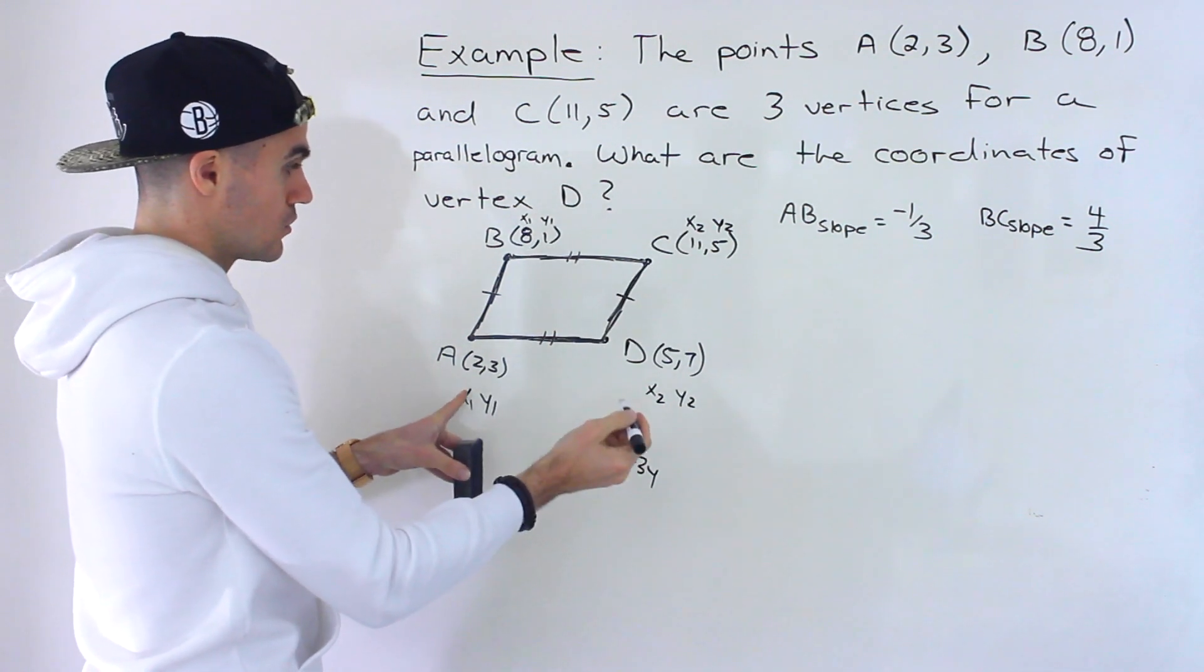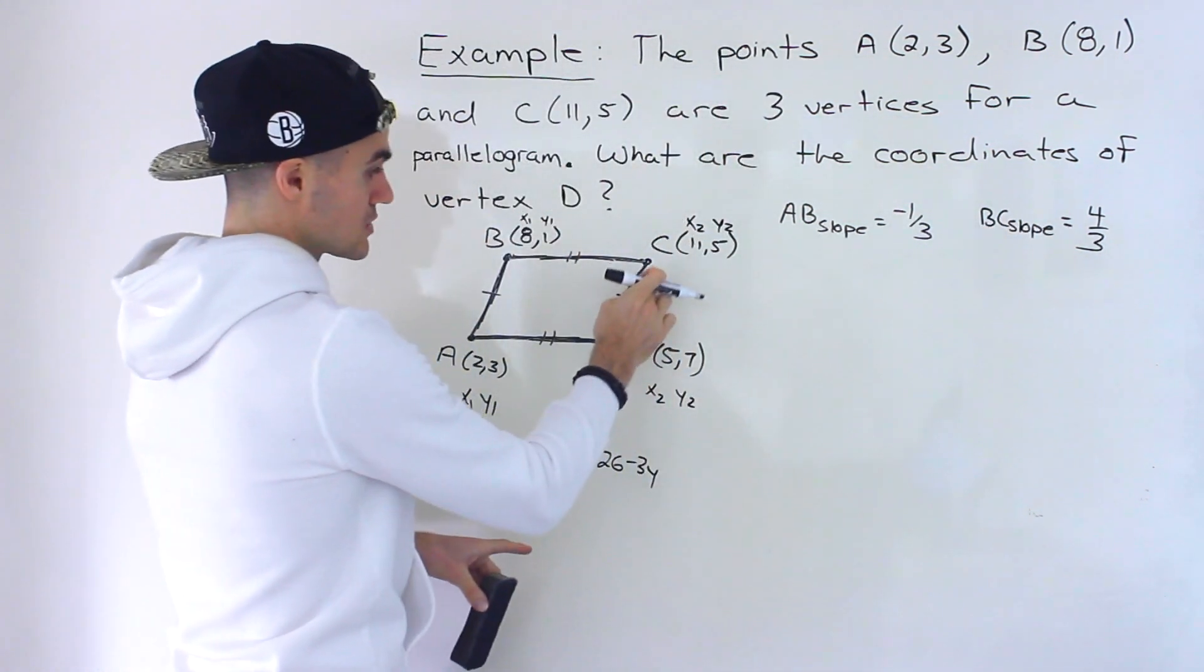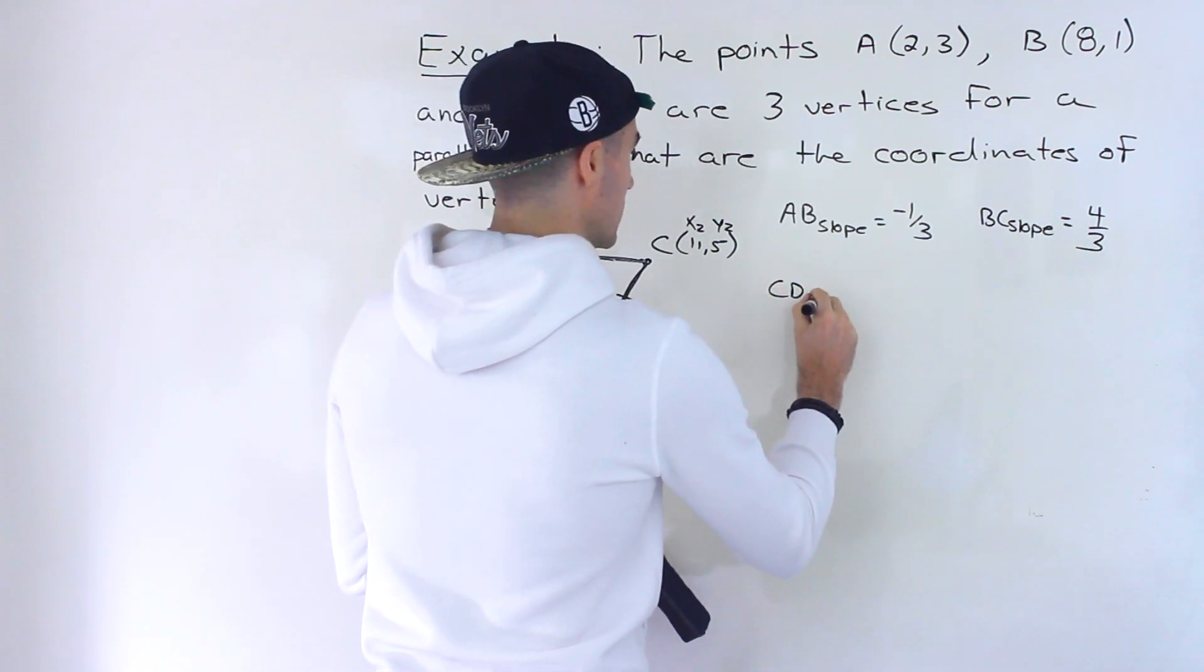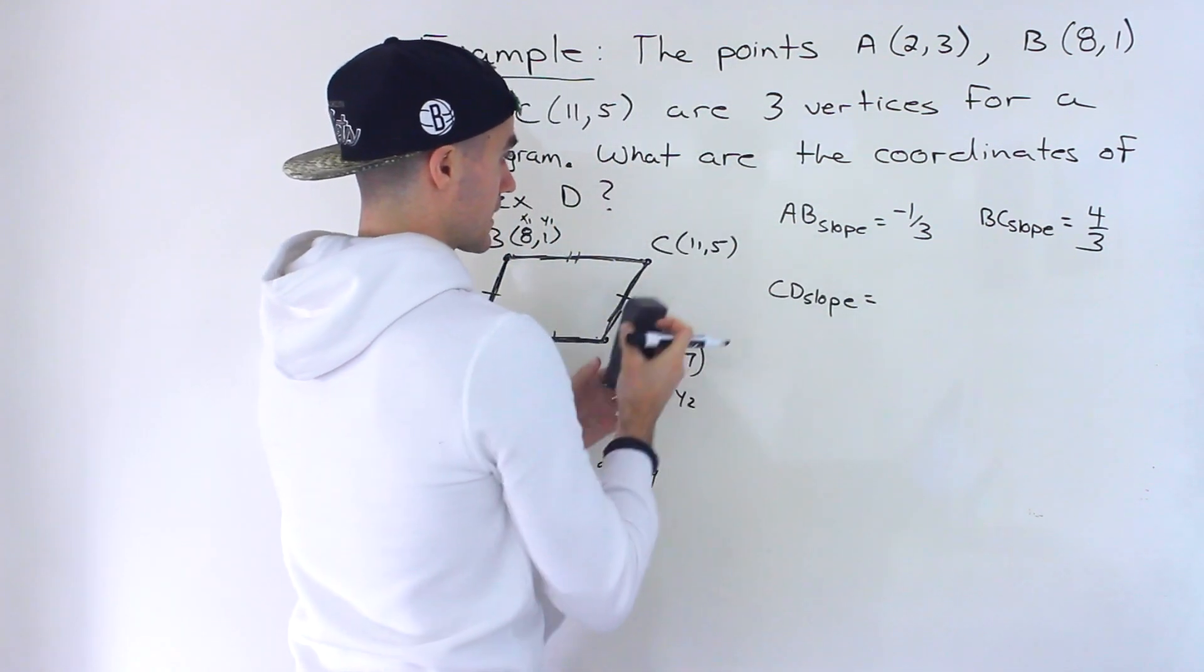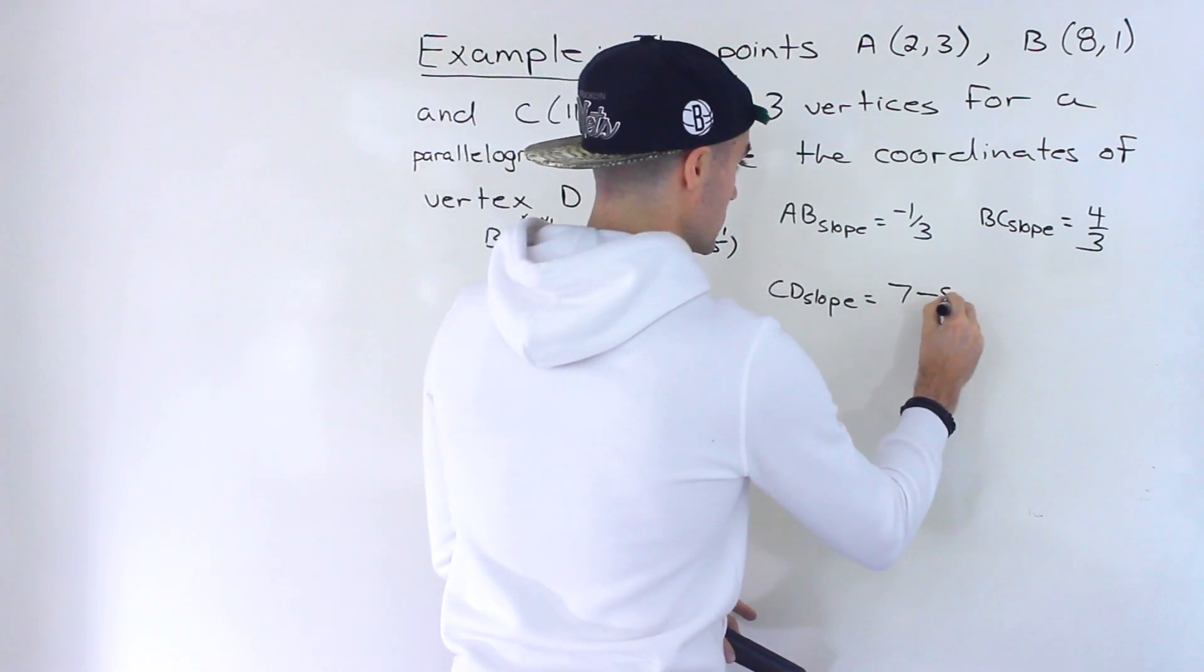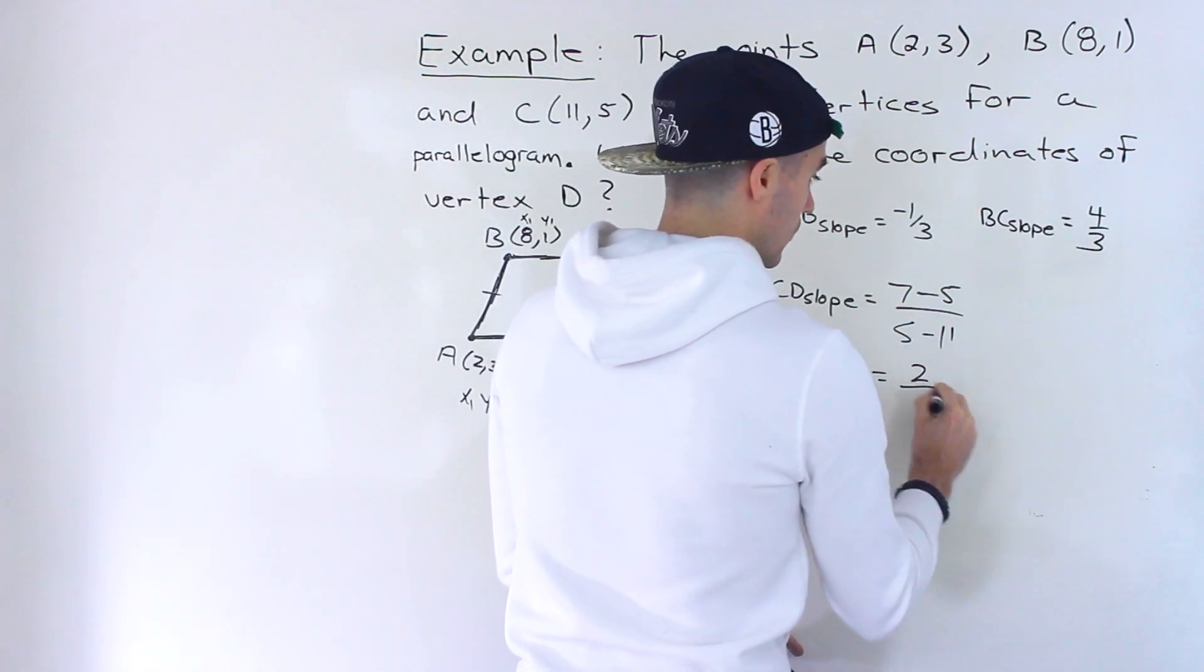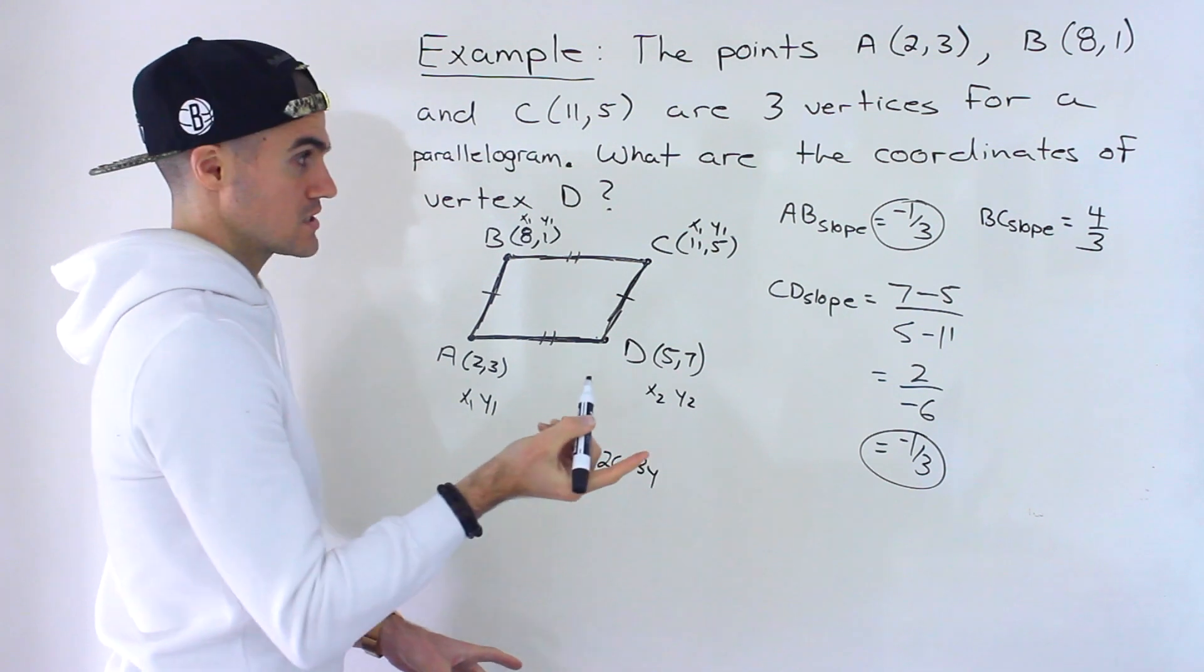And so we just have to find the slope of AD, make sure that it's equal to the BC slope. And then we have to find the slope of CD, make sure it's equal to the AB slope. Okay, so let's start off with finding the CD slope. So this is X2, Y2. Let's let this be X1, Y1. So we'd have 7 minus 5, Y2 minus Y1, over X2 minus X1, 5 minus 11. We'd end up with 2 over negative 6, which indeed gives us negative 1 over 3. So half of the verification is done now.